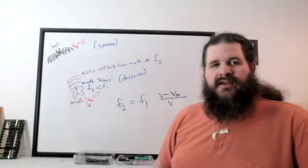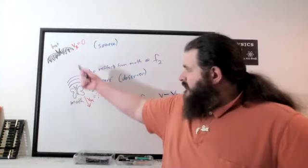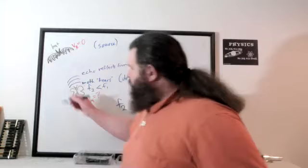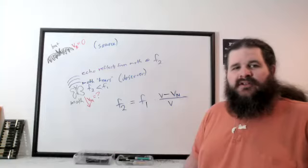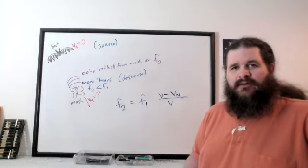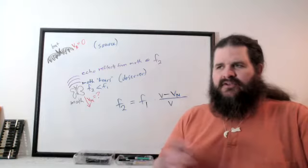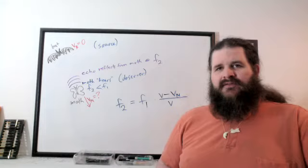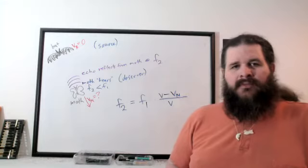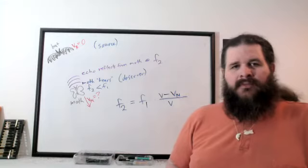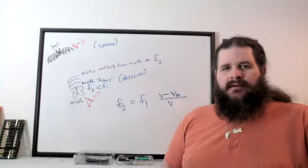A student asks what changes on reflection. Amplitude can decrease because not all energy is reflected — some is absorbed. Phase can sometimes reverse depending on whether you're reflecting off a slower or faster material, adding an extra phase shift of pi. But the key point is that frequency doesn't change on reflection.